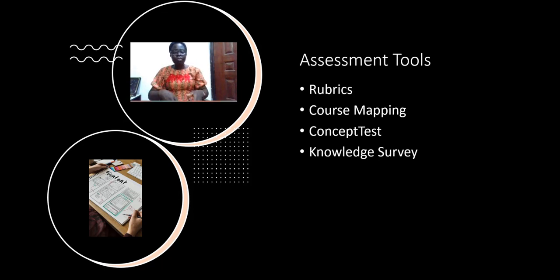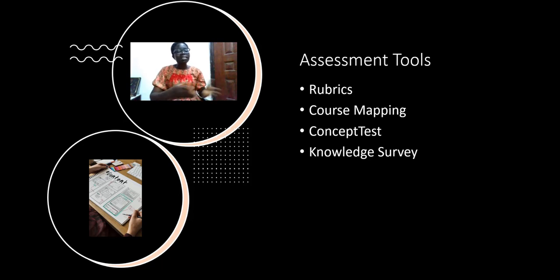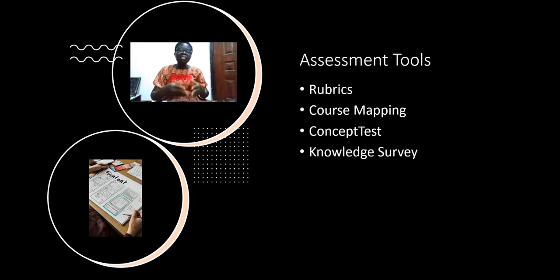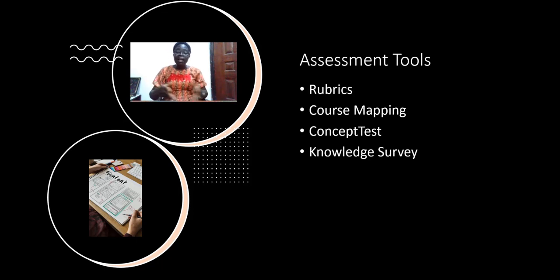Then you have the knowledge survey. The knowledge survey helps to find out the extent to which the learners have learned. It helps identify their strong points, weak areas, and the things needed to improve their learning. At the same time, it helps the instructor identify areas where teaching also needs to be improved.